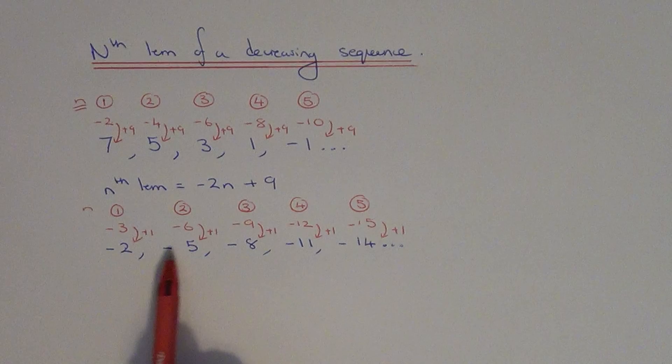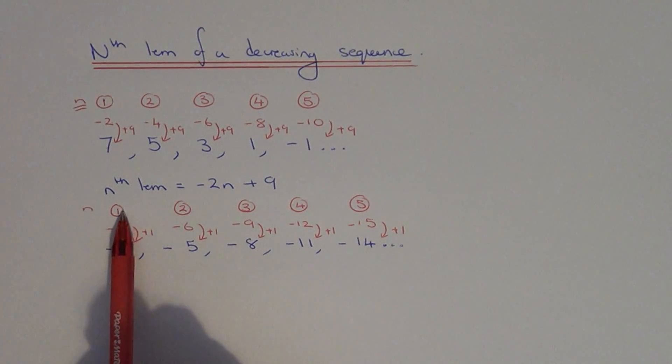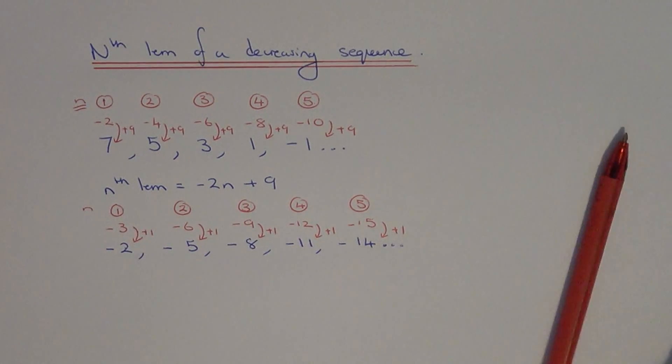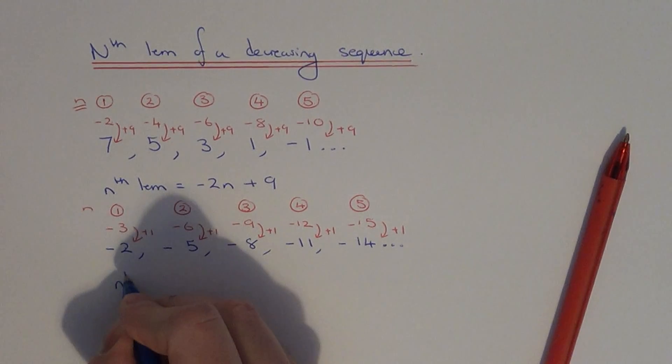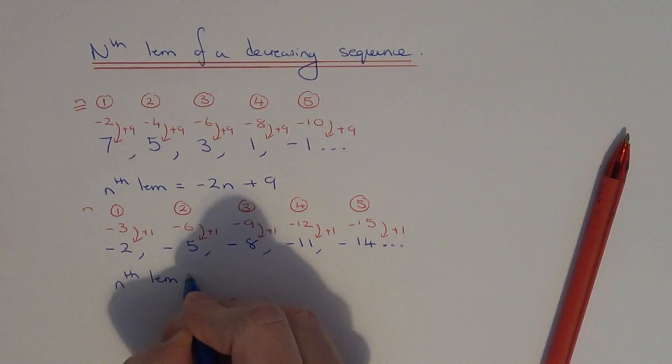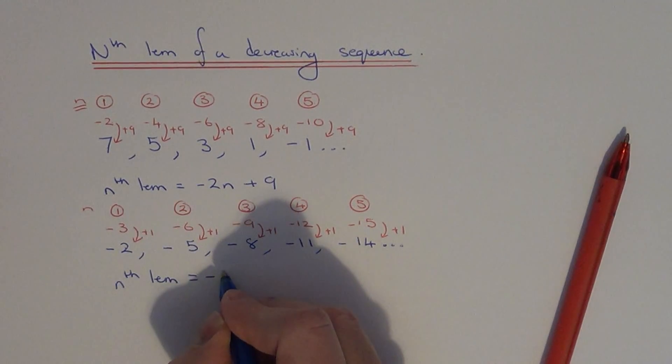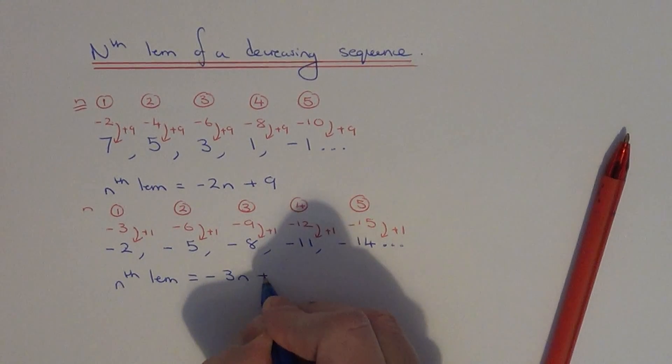So to get the numbers in the sequence, we need to multiply the position numbers by minus 3 and then add on 1. So therefore, the nth term will be minus 3n plus 1.